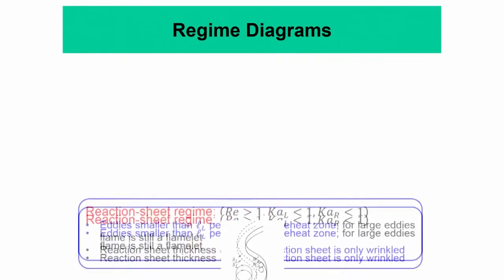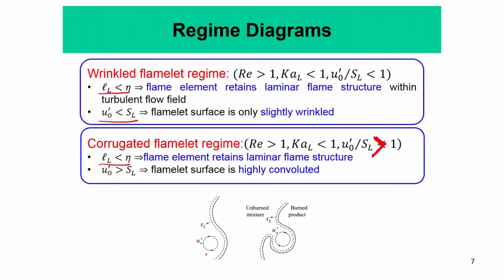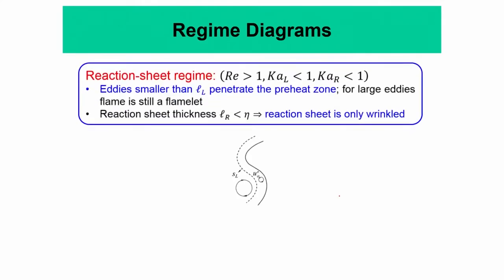To give a visual example: you can see an eddy which is essentially rolling and stretching the flame, forming a fold. These kinds of structures are found in the corrugated flamelet regime.